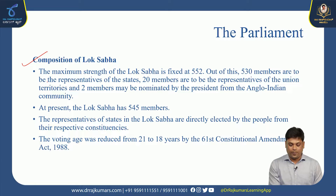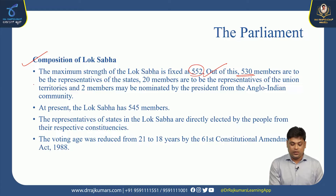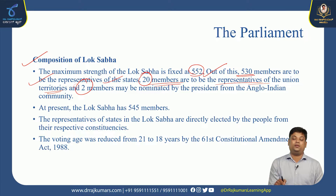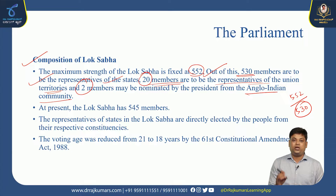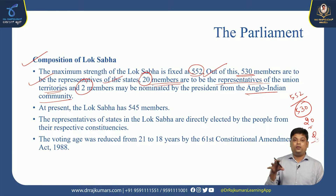The maximum strength of the Lok Sabha is fixed at 552 seats. Out of these, 530 members are to be representatives of the states, around 20 members are representatives of the union territories, and 2 members may be nominated by the President of India from the Anglo-Indian community.